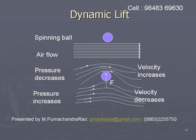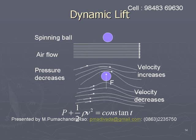If the ball is spinning in the clockwise direction, the upper layers will be dragged to the right and the lower layers will be dragged to the left by the spin of the ball. Thereby, the speed of the upper air layers increases, while the velocity of the air layers in contact with the bottom surface decreases. So there is an increase of velocity in the upper layers and a decrease of velocity in the bottom layers.